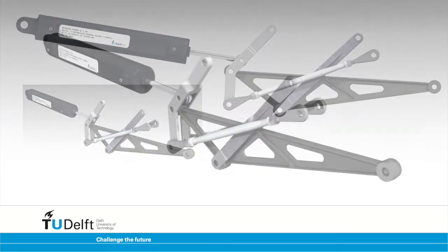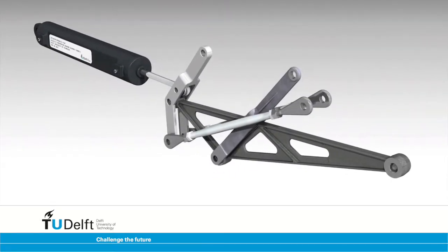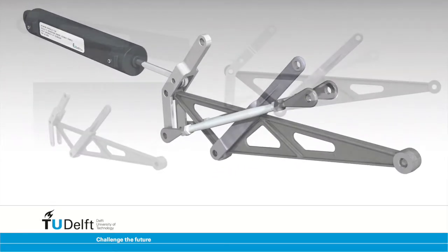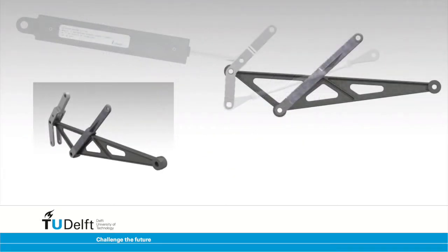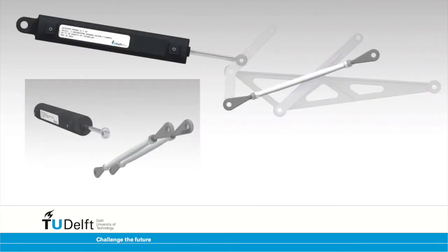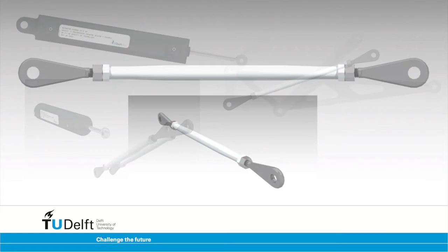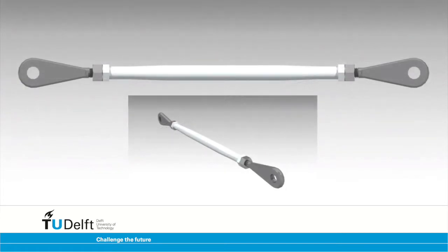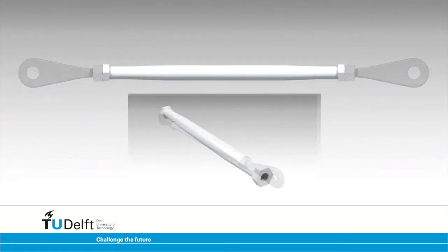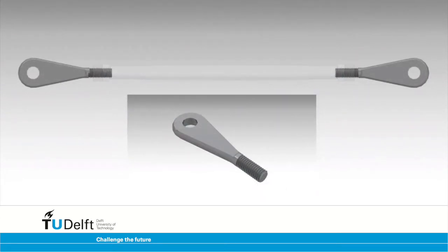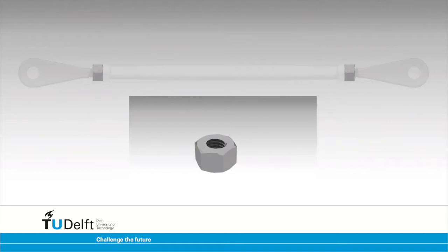Assembly components can be single parts, such as the crank and the linkages, but a component can also be an assembly. We call these sub-assemblies. The support tubes are composed out of a push rod, two connectors, and two nuts to constrain the connectors.